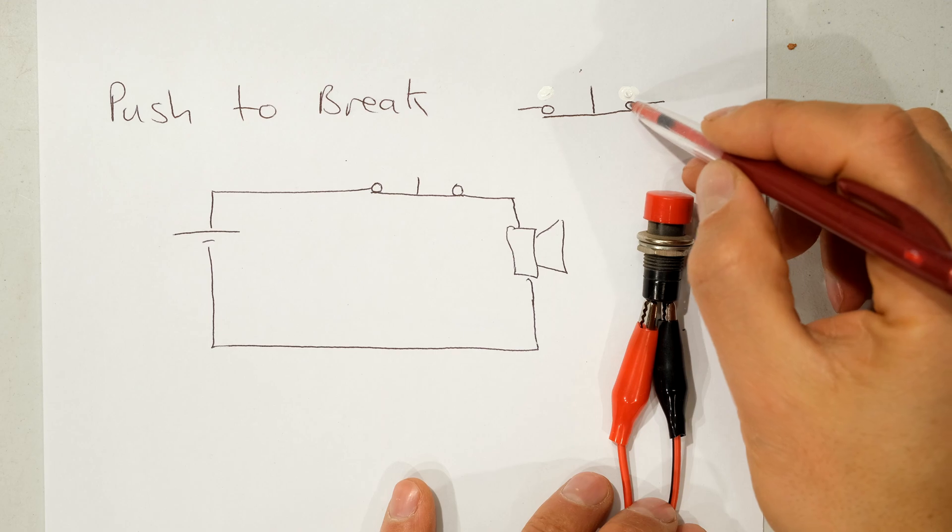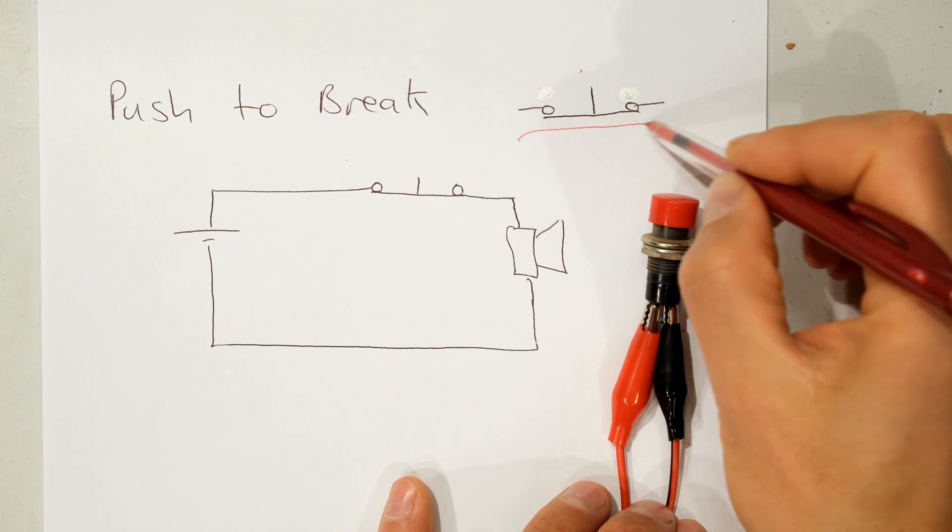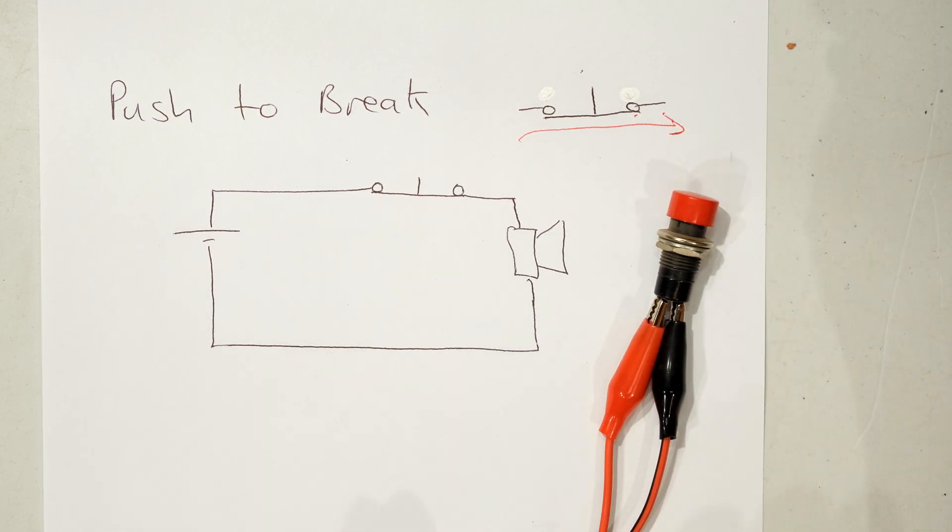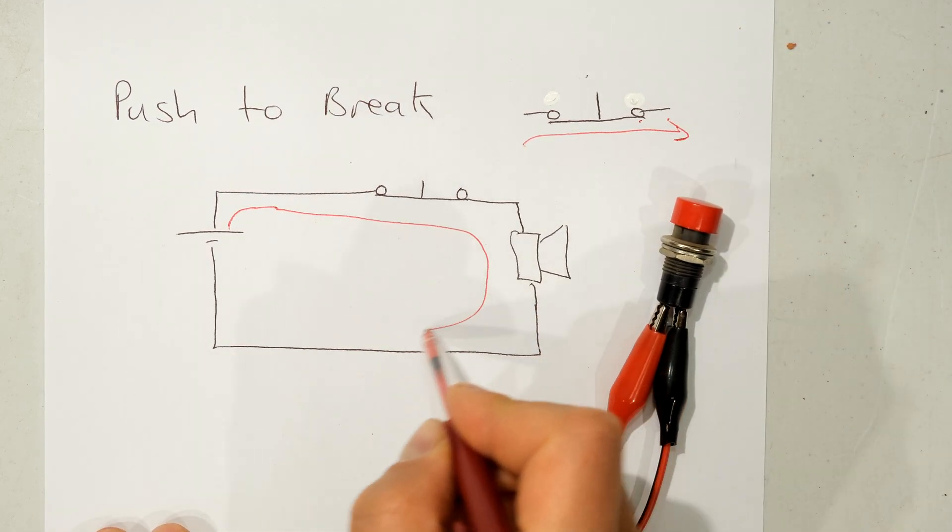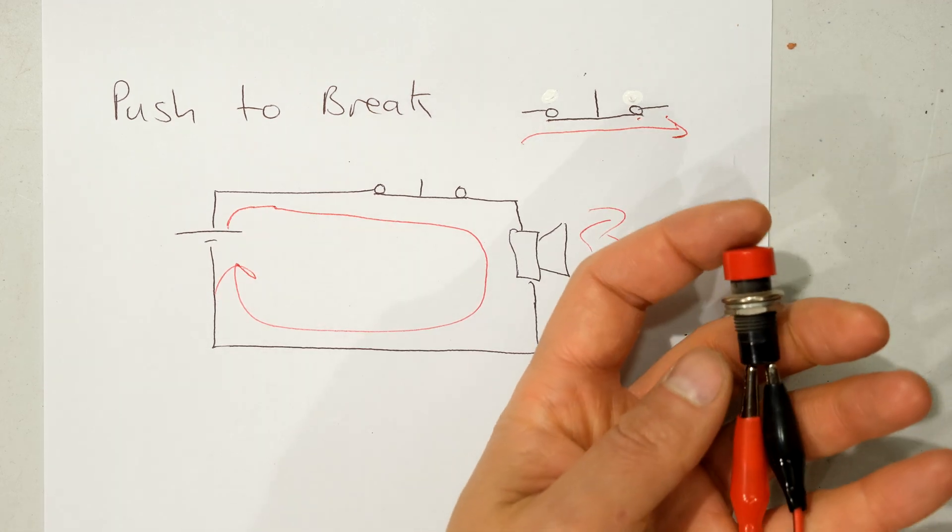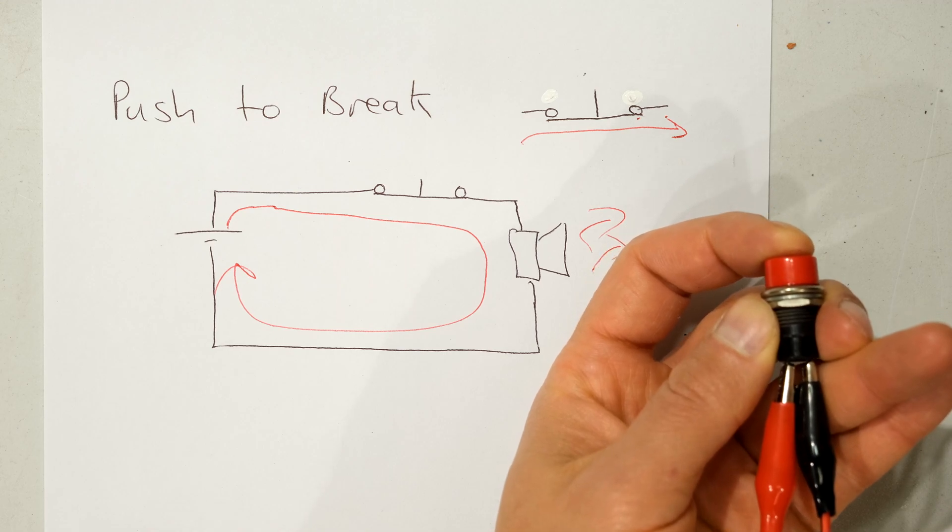So in this case you can see the symbol. It's a closed circuit when the switch is at rest. The switch is at rest. Nobody's touching the switch. It is a closed circuit. Current can flow and that is why we are hearing that siren or that buzzer making that sound.